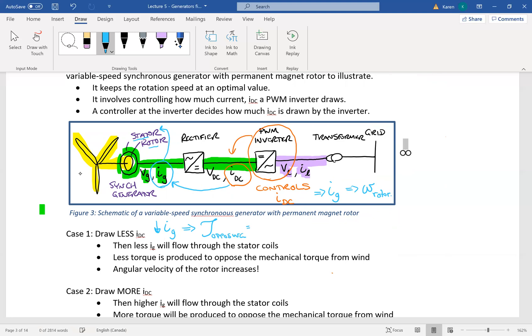That opposing torque is the torque in the stator. And it opposes the wind. So what you've done is you've decreased the opposition, the opposition to the wind rotation. And if you decrease the opposition,